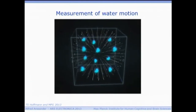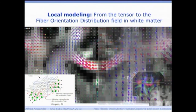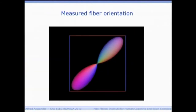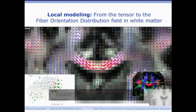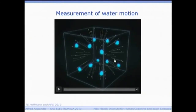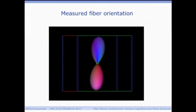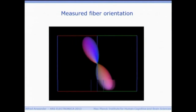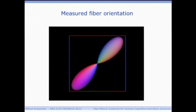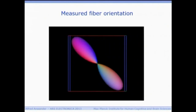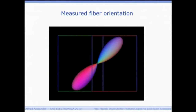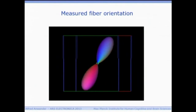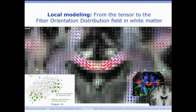Water diffusion is measured in many different directions, and on that basis we can reconstruct this shape, which represents the local water diffusion and the distribution of fibers. The cube around it symbolizes our voxel — a rather large volume of one or two millimeters — and within that volume we can see the movement of the water, and we reconstruct it in that shape.